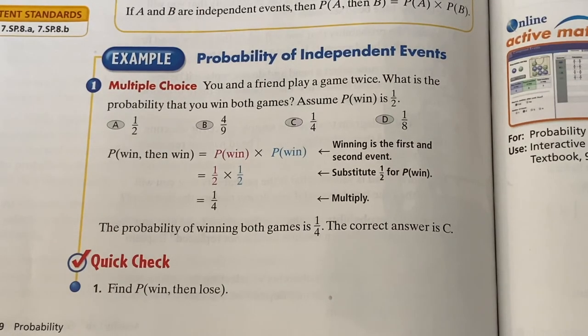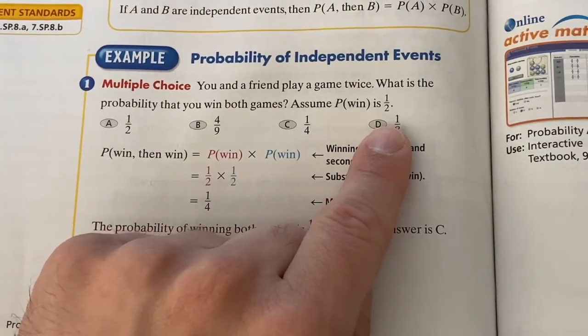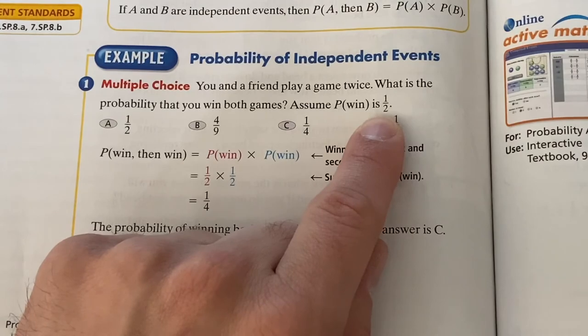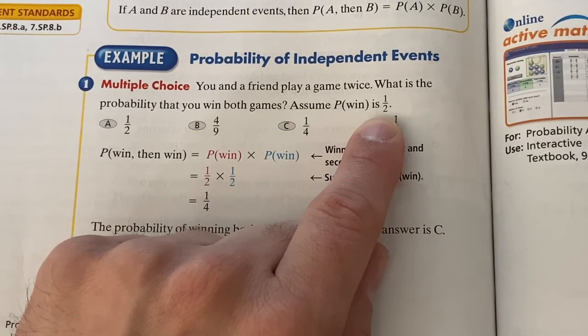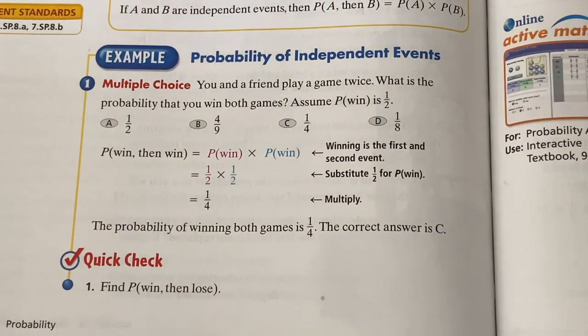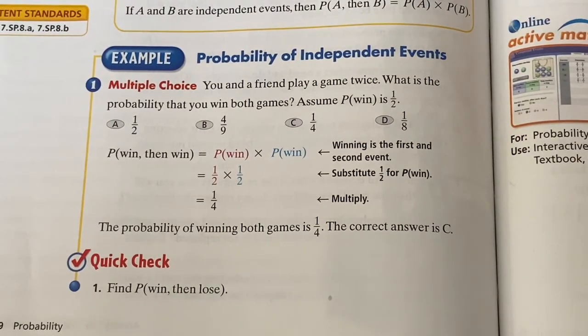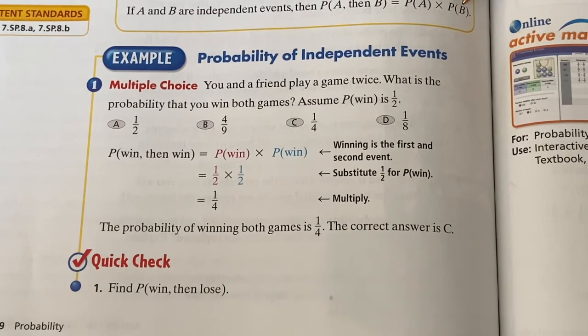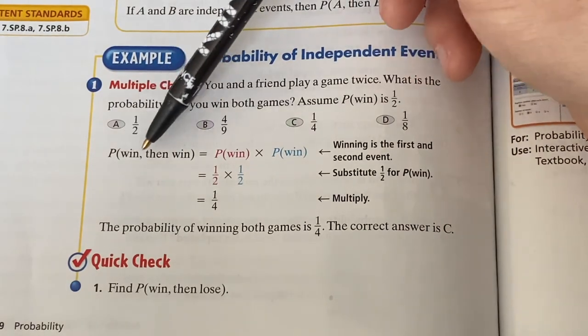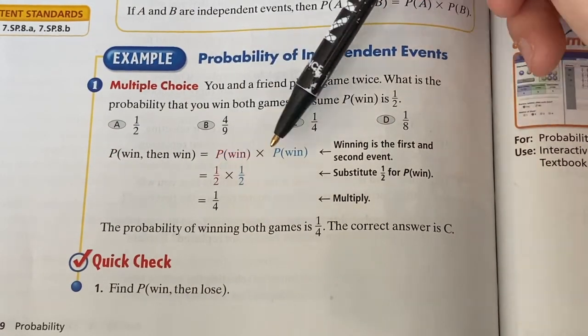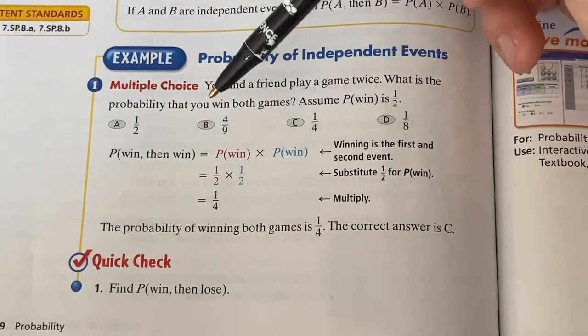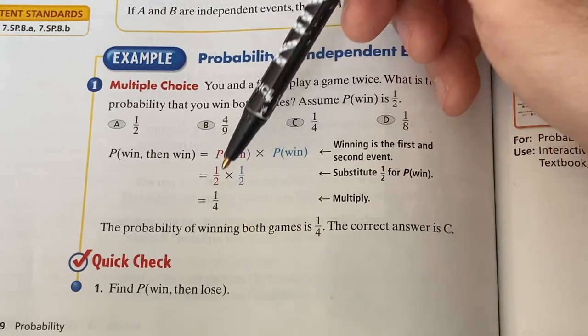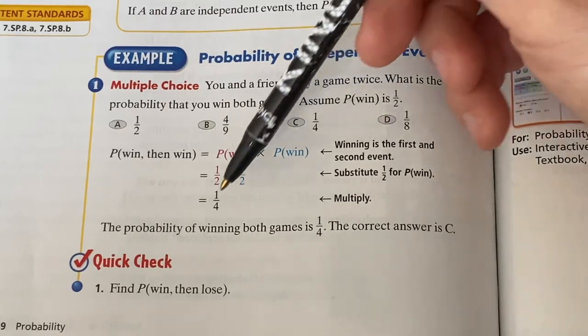Let's take a look here at example one and calculate the probability of two independent events. It says you and a friend play a game twice. There's your two events. What is the probability that you win both games? And it says assume that the probability you win is one half. The way you calculate this probability of winning both games is like it says up here. What's the probability you win the first game? That would be event A, one half. And we will multiply that times the probability you win the second game, the second event. These are independent events. The one game has no effect on the other game. You just multiply one half times one half and you get one fourth. The probability that you will win both games is only one out of four.